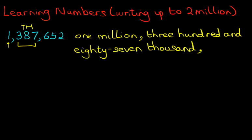Again, another comma. And now we finish it off with the units. We've got hundreds, tens and units. So 1,387,000. And we write 600 and 52.